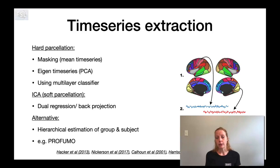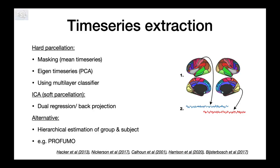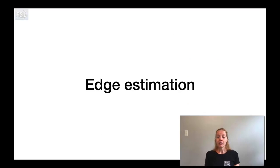The next step is time series extraction, most commonly just the mean time series of a node. When using ICA to define nodes, it most likely involves dual regression. Other options include classifiers or a method called PROFUMO, which is relatively new in FSL and essentially combines ICA and dual regression into one method. It tends to be better at estimating time series for individual subjects because it does this hierarchically within the same analysis rather than separating out the group-level and subject-level estimation.